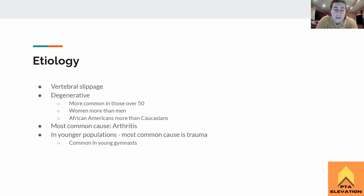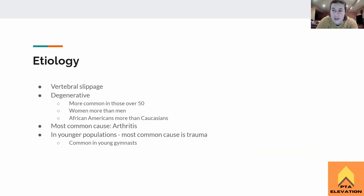For etiology, with spondylolisthesis, it is a vertebral slippage — one vertebra is beginning to anteriorly translate over top of the disc, and that is causing all the problems. There are two different types: a trauma type, where you're hit in the back to the point where your vertebrae starts slipping forward, more common with gymnasts experiencing trauma.